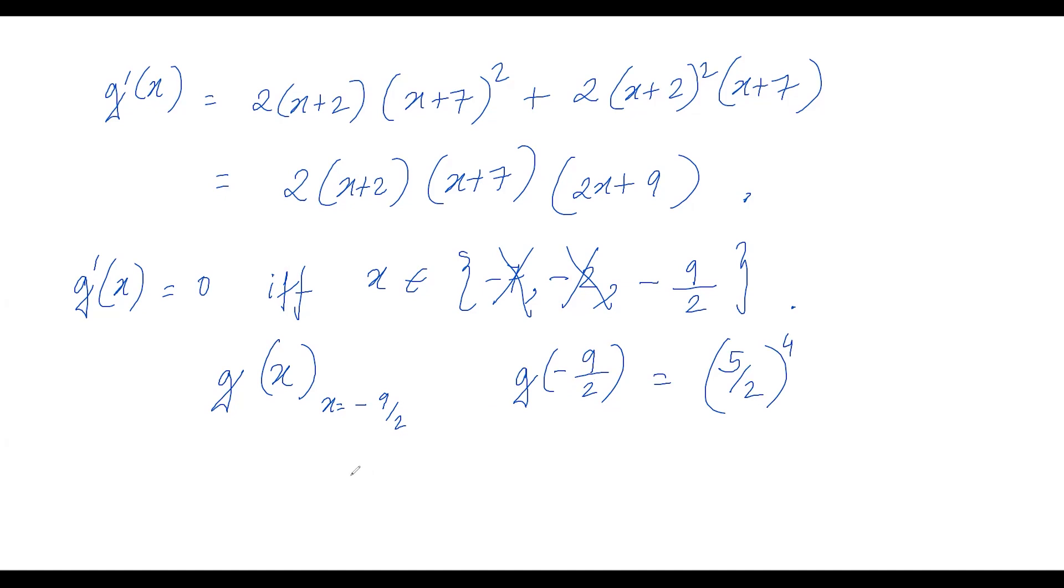And so you see that if we subtract (5/2)⁴ from g(x), then at -9/2 it will take the value zero at x equals -9/2. And thus a should be equal to -(5/2)⁴. So this is the only possibility for a, and so we are done with question two.